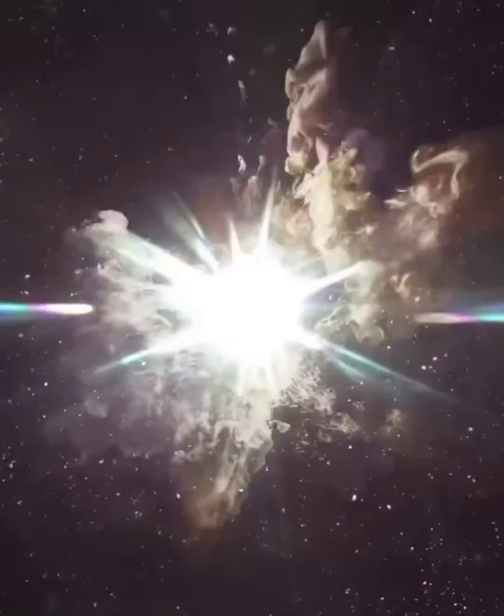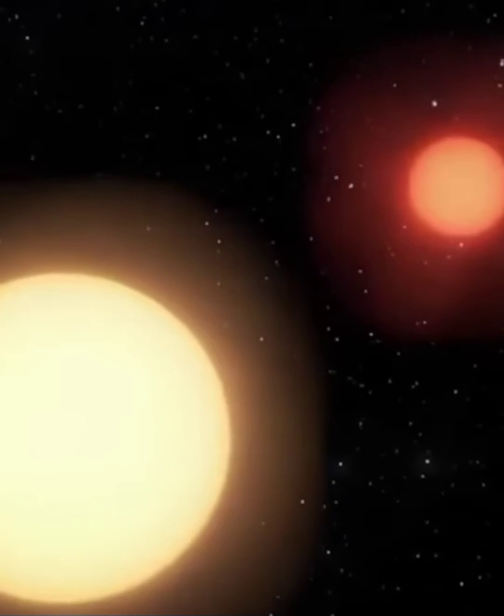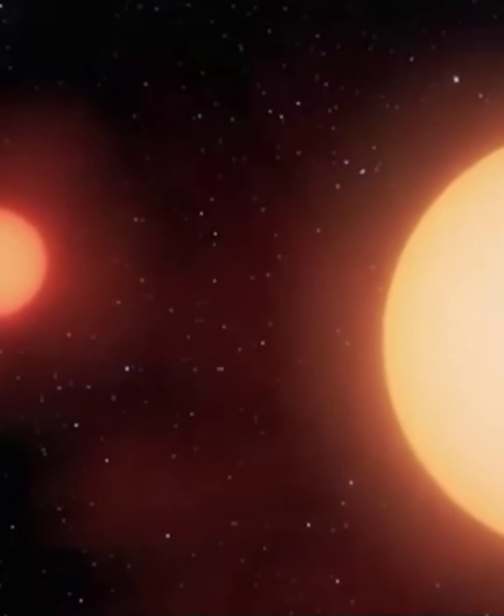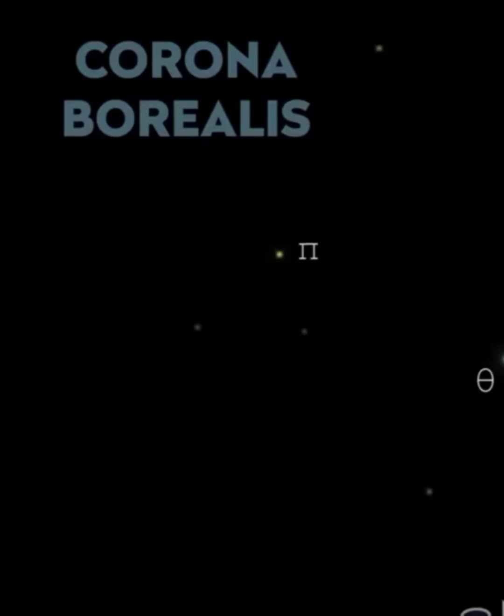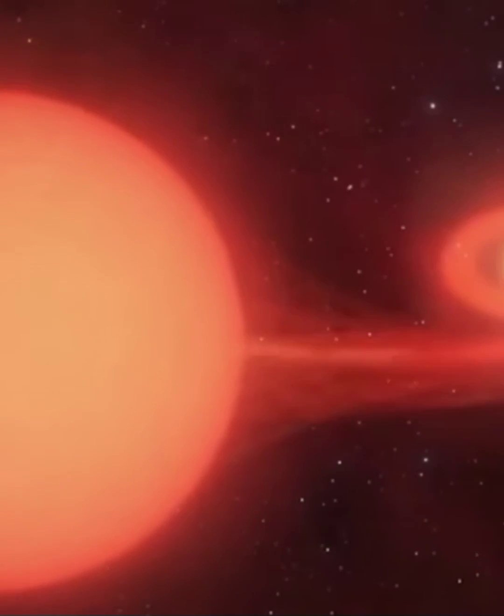This happens because T. Corinae Borealis is a binary system with a white dwarf and red giant. The stars are close enough that as the red giant becomes unstable from its increasing temperature and pressure and begins ejecting its outer layers, the white dwarf collects that matter onto its surface.